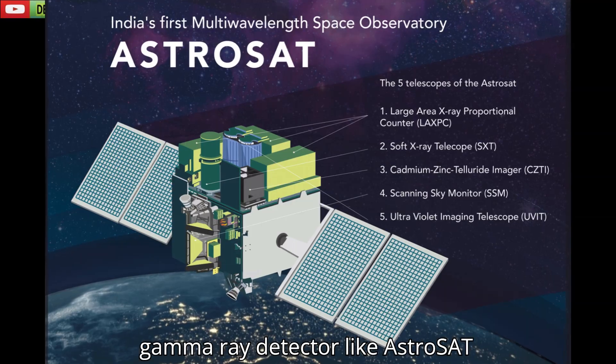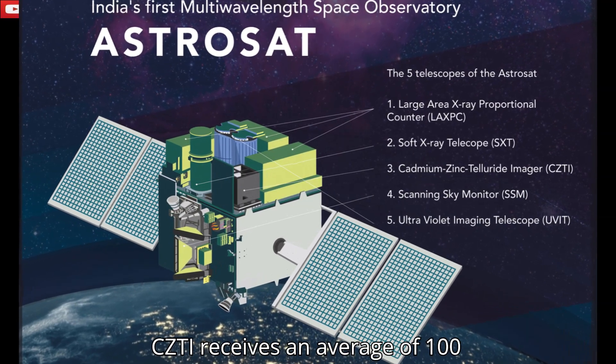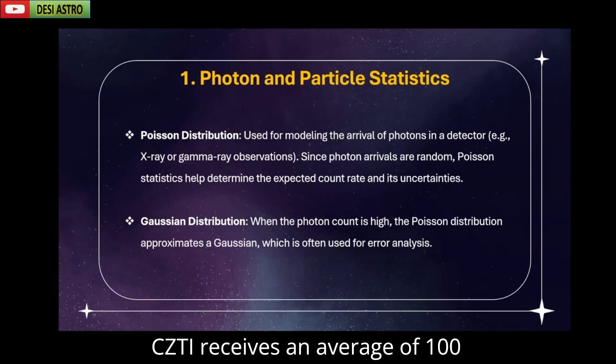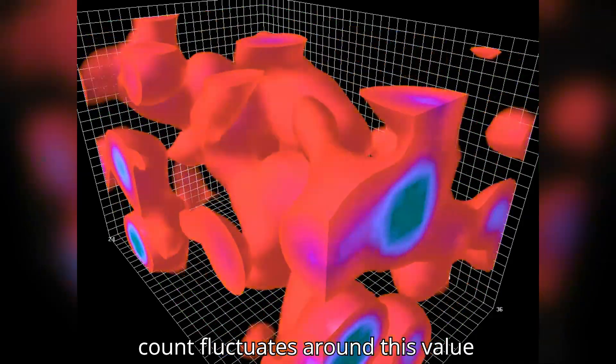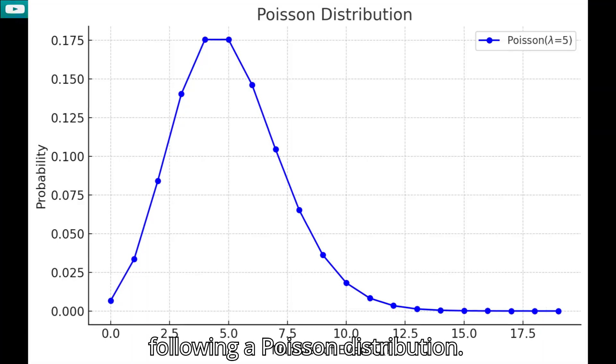For example, a gamma-ray detector like AstroSat CZTI receives an average of 100 photons per second. The actual count fluctuates around this value following a Poisson distribution.